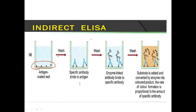After adding the antigen to the microtiter plate, we add a blocking buffer. The blocking buffer will block the protein binding sites in the microtiter plate, so those sites won't interfere. After adding the antigen and blocking buffer, we wash the microtiter plate with buffer solution. Then we add the primary antibody.